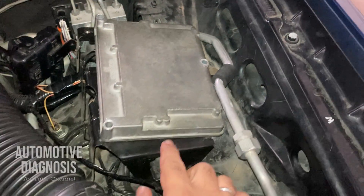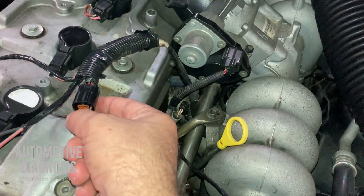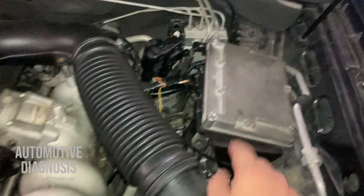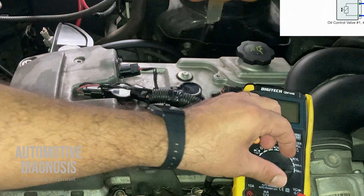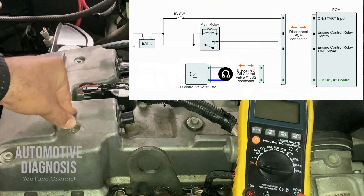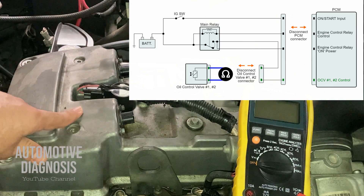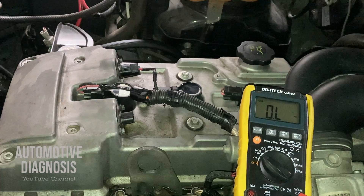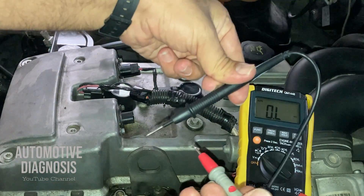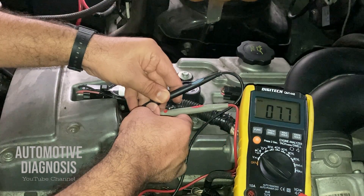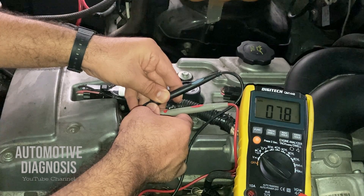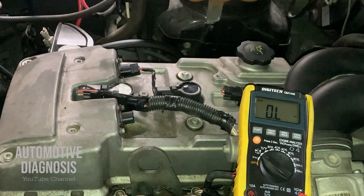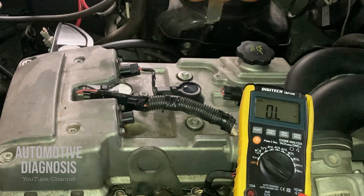The other wire on the VVT solenoid valve is the control line going all the way to the engine control module. You can test it by checking continuity or resistance between the control line on the VVT solenoid side and the ECM side. Right after that, you can test the internal resistance of the VVT solenoid valve. Set the multimeter to resistance and measure across the two pins. For this engine I'm getting 7.8 ohms, which is okay. Generally for many engines, I've seen between 7 to 14 ohms. If shorted internally you'll get something really low; if open, you'll get no reading or something really high.